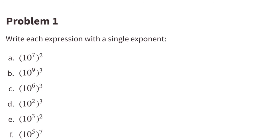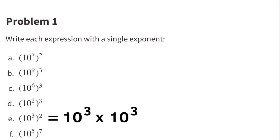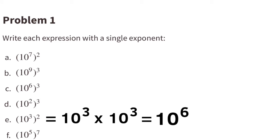Part E: 10 to the 3rd power, all squared. That means 10 to the 3rd times 10 to the 3rd. Exponent 3 plus 3 equals exponent 6. So 10 to the 3rd power all squared equals 10 to the 6th power.